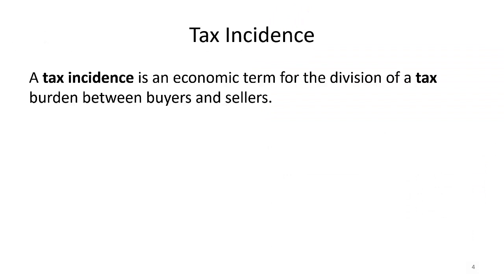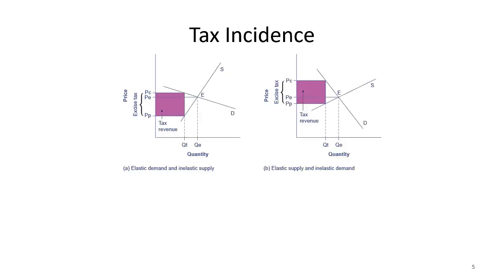Tax incidence is an economic term for how the burden of taxation is divided between buyers and sellers. Who bears the higher tax depends on the elasticity of demand and supply. In the case of inelastic demand and inelastic supply, the burden distribution differs from a case with elastic supply but inelastic demand — where supply is flatter and demand is steeper.